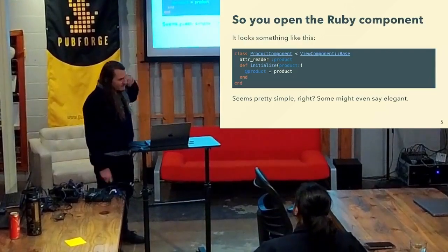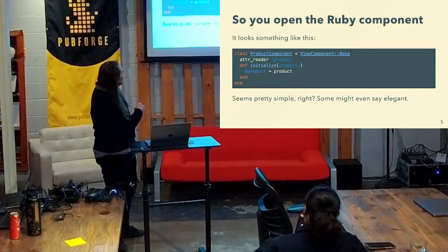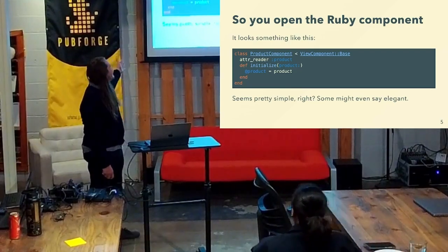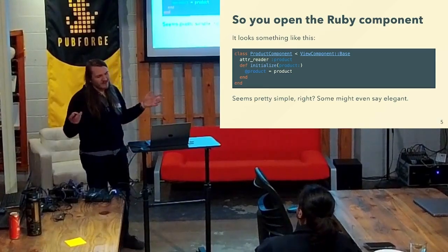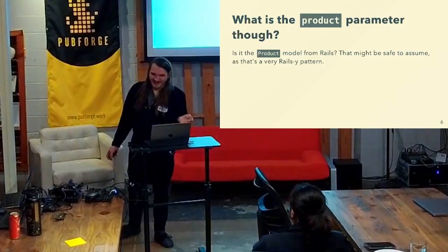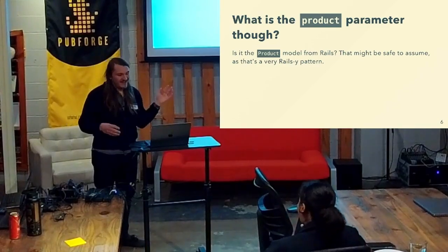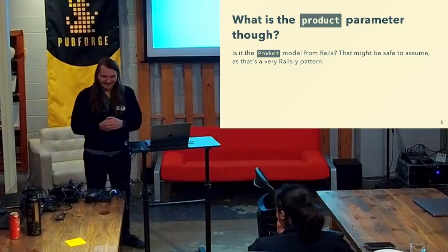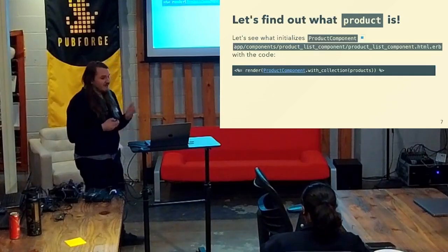Well, what is product? So you open the Ruby component and you see this code — there's a bunch of stuff, but in particular we pass in a parameter of product and assign it to an instance variable of product. There's an attribute reader, which basically lets you get that value publicly and not set it. That's pretty elegant, I guess. But what is the product parameter? Is it the product model? Rails is this MVC framework — model, view, controller. So you might go and look and think, oh, this is probably the product model. That might be safe to assume, but you know what they say about assuming. We want to look through the source code and actually figure out what it is.